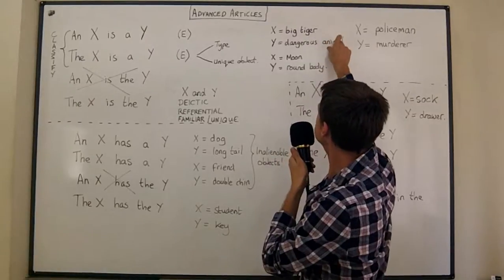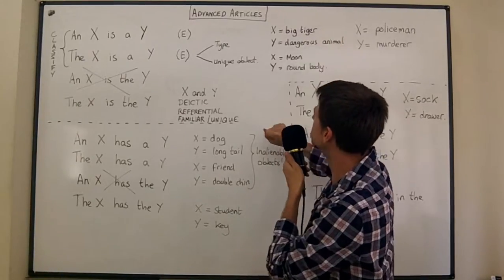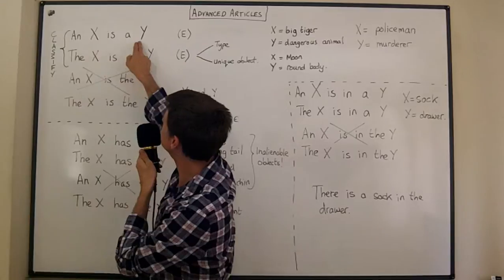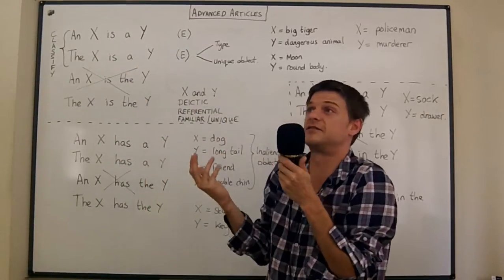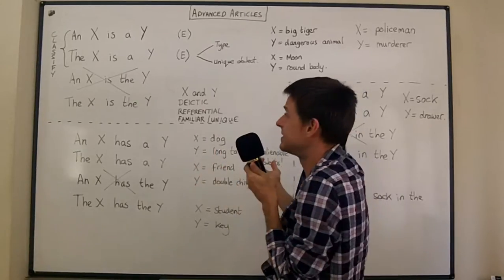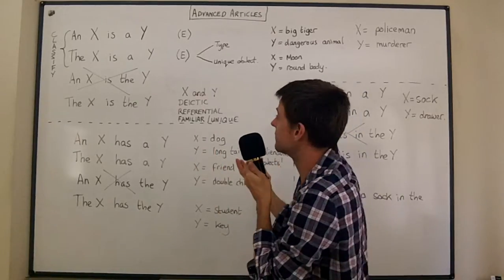Coming on to tiger and dangerous animal - big tiger, dangerous animal. A big tiger is a dangerous animal. It's true and this is very light on information. It's just saying that any big tiger would be a dangerous animal and I think we can all agree that's true.